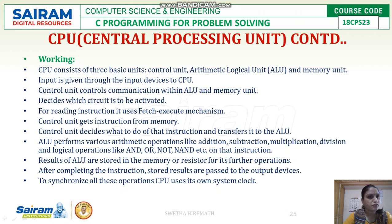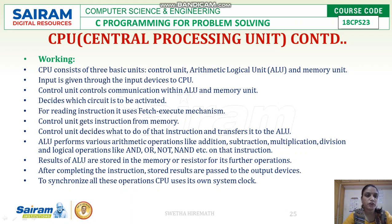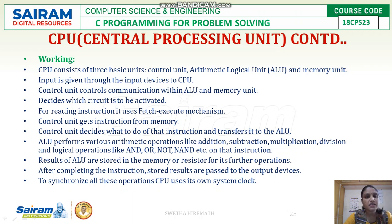The CPU consists of three basic units: control unit, arithmetic logic unit, and memory unit. Input is given through the input device to the CPU. The control unit controls communication within the ALU and memory, decides which circuit has to be activated at a given point in time, and uses a fetch-execute mechanism for reading instructions. The control unit gets instructions from memory and decides what to do with them.